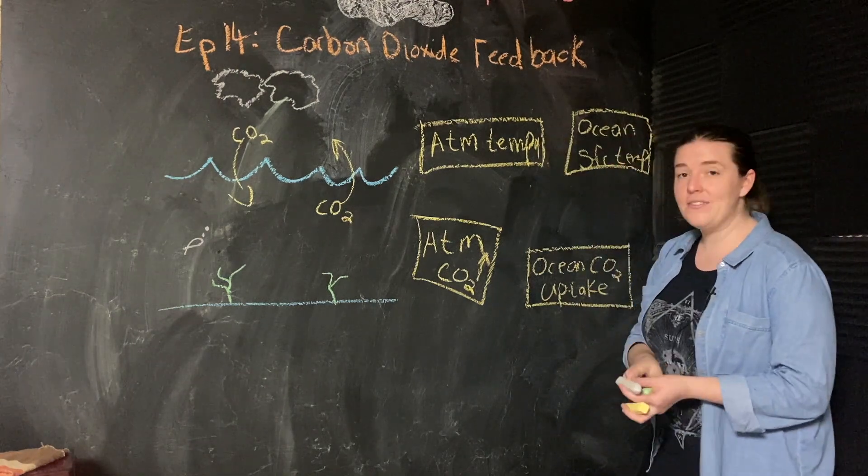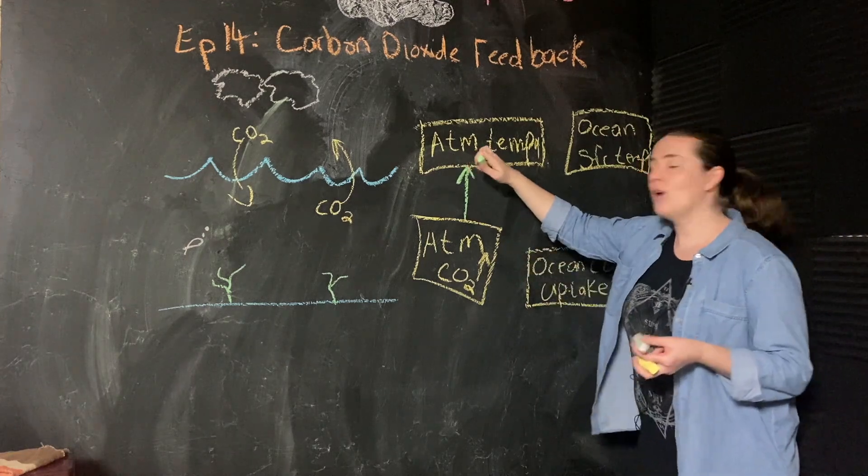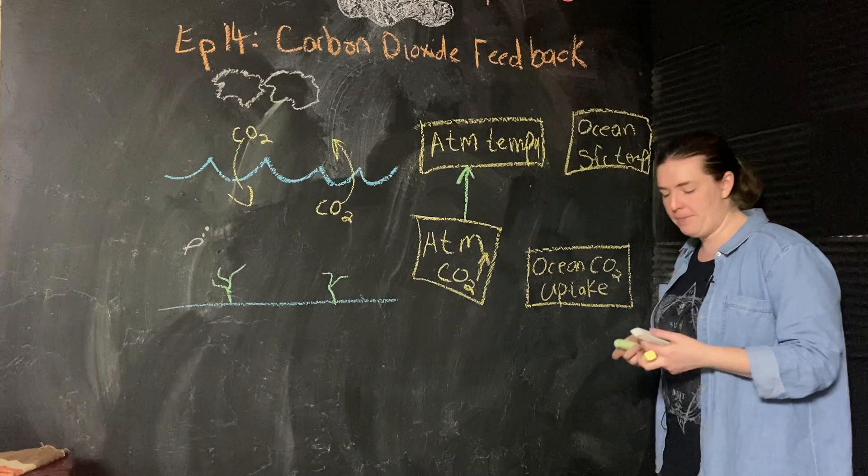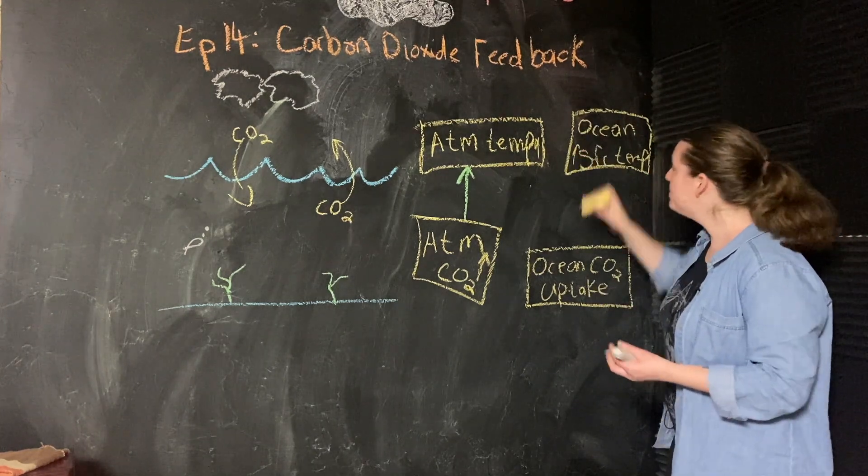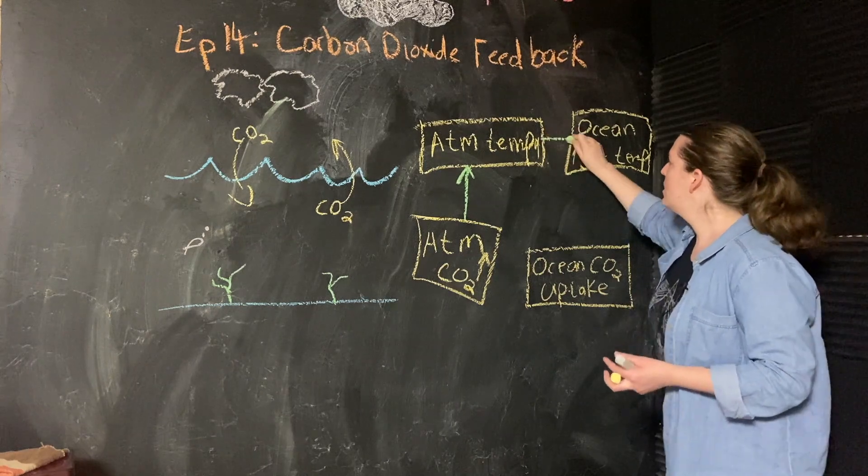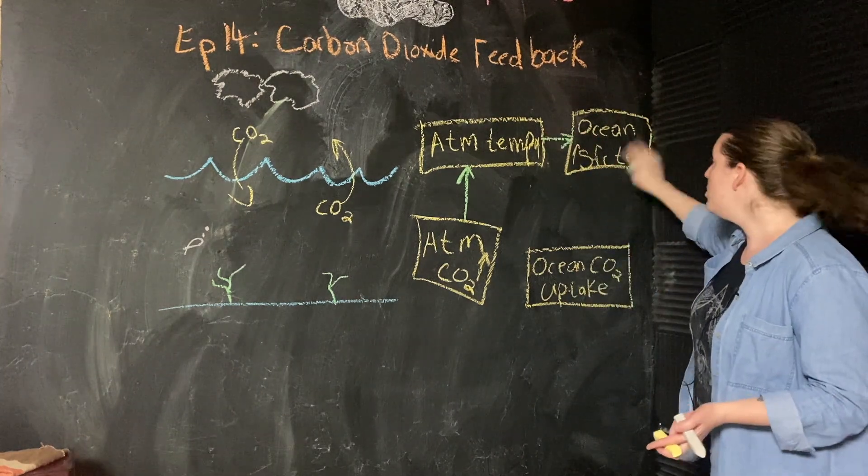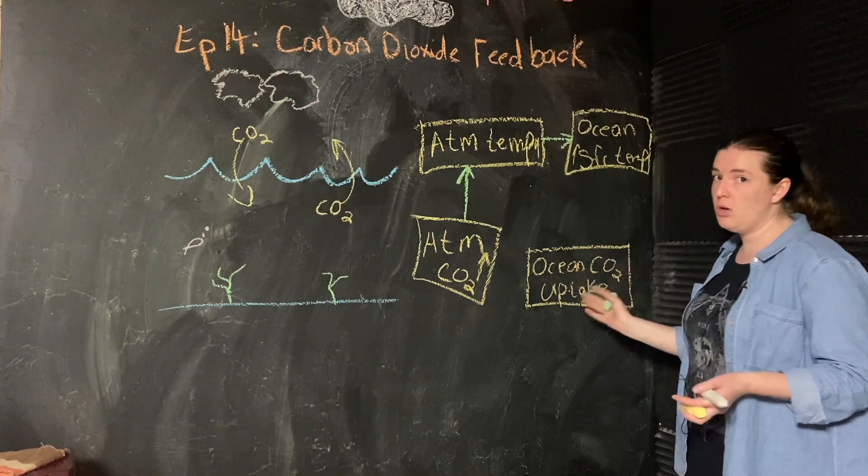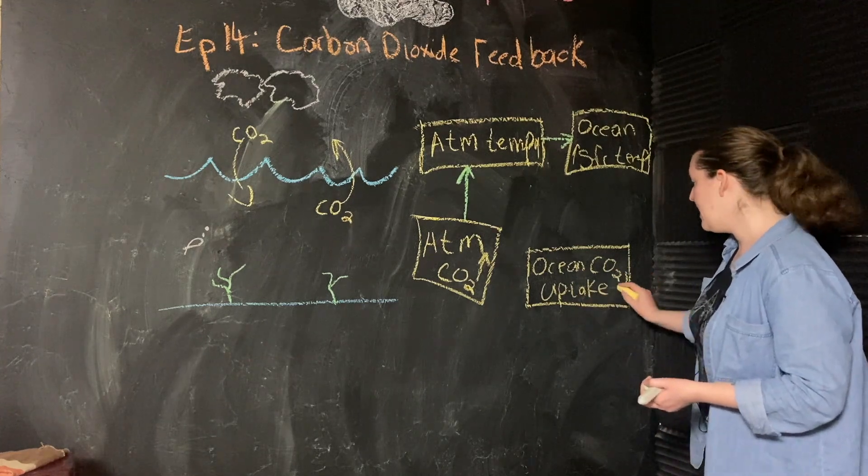That gives us our positive connection on this leg of the loop. The warmer the atmosphere, the warmer the ocean surface is going to be. So this goes up. And as we just saw, the warmer the ocean, the less ocean CO2 uptake. So this term would go down.